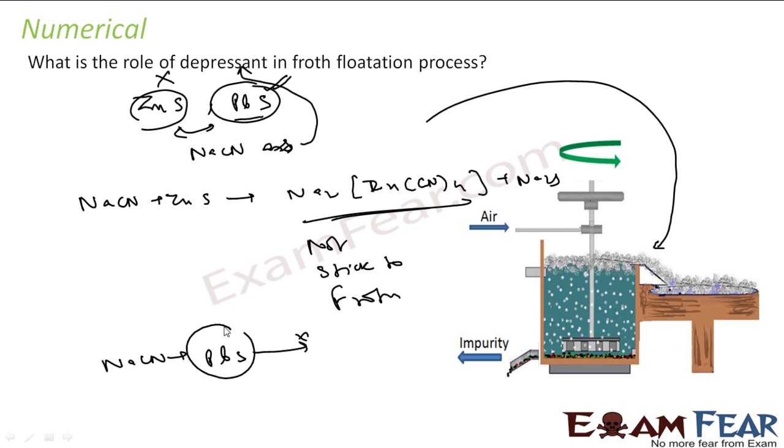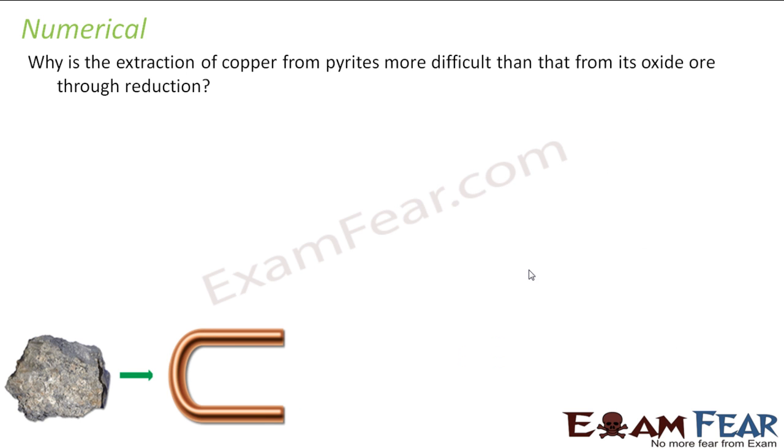But my NaCNS, when you react with PbS, there will not be any reaction, so this PbS will stick to froth, correct? Okay, the next is: why is the extraction of copper from copper pyrites more difficult than from its oxide ore through reduction?